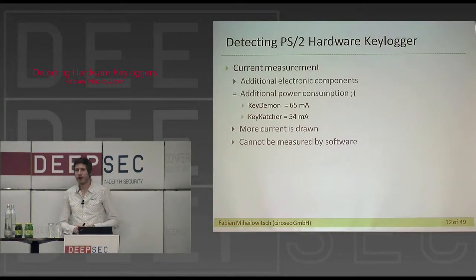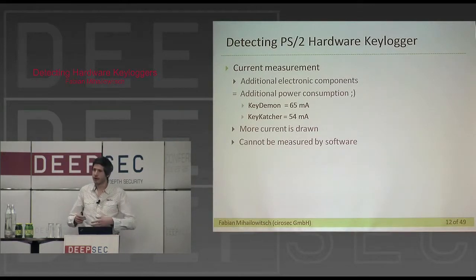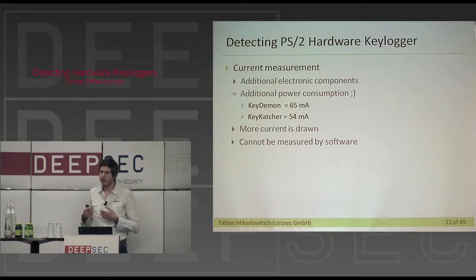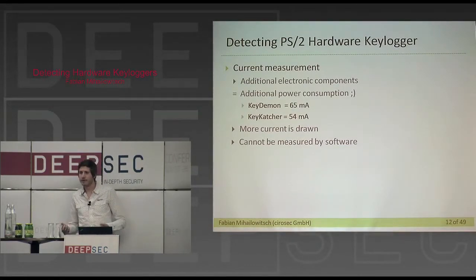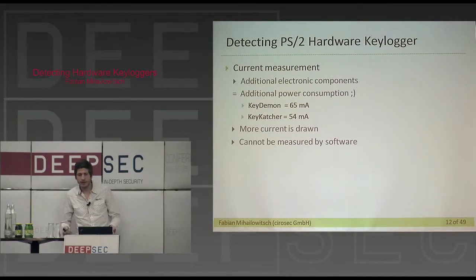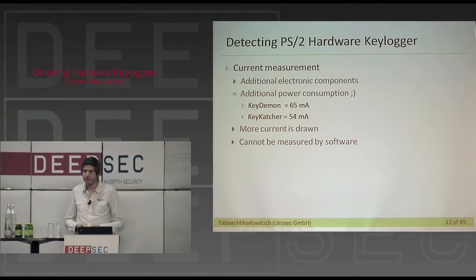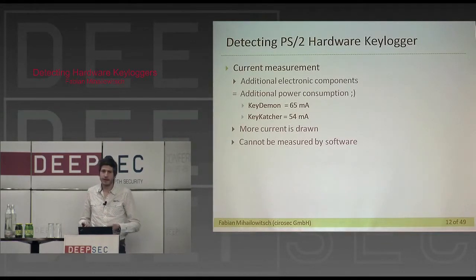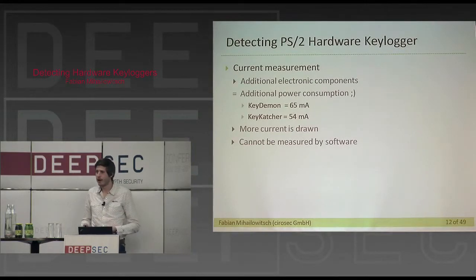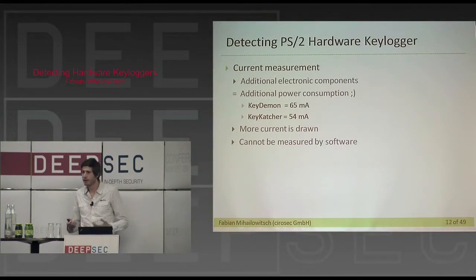The first detection idea I came up with was current measurement. You plug in additional hardware with additional electronic components that consume power. Measuring on the line physically, Key Daemon consumes about 65 milliamperes and Key Catcher 54. However, you cannot measure this in software since the motherboard does not provide any sensors to measure it.